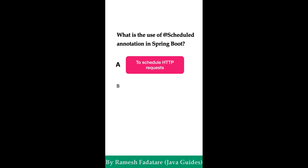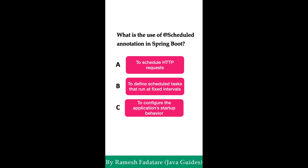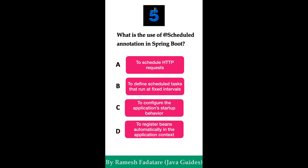What is the use of @Scheduled annotation in Spring Boot? Option A: to schedule HTTP requests. Option B: to define a scheduled task that runs at fixed intervals. Option C: to configure application behavior. Option D: to register beans automatically in the application context. The correct answer is option B. The @Scheduled annotation in Spring Boot is used to schedule a task to be executed at specific intervals or times. It helps run a method automatically at a fixed rate, with a fixed delay, or according to cron expressions, making it useful for automating periodic tasks.